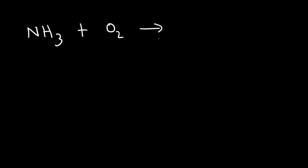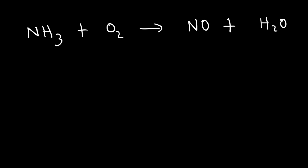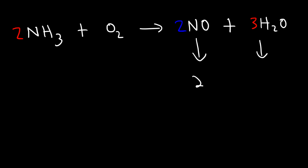Let's try a harder example. Ammonia reacts with oxygen gas to produce nitrogen monoxide and water. The number of nitrogen and oxygen atoms are currently the same on both sides. The only thing that's different is the hydrogen atoms — we have 3 on the left and 2 on the right. 2 × 3 = 6, so we want 6 hydrogen atoms on both sides. We put a 2 in front of NH₃ and a 3 in front of H₂O. Now we have 6 hydrogen atoms on both sides. But we have 2 nitrogen atoms on the left and only 1 on the right, so we put a 2 in front of NO. We have 2 from NO and 3 from water, for a total of 5 oxygen atoms on the right.